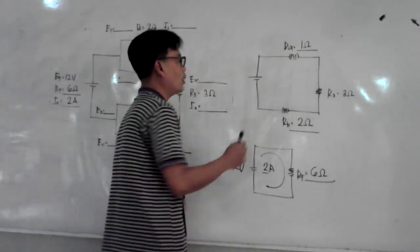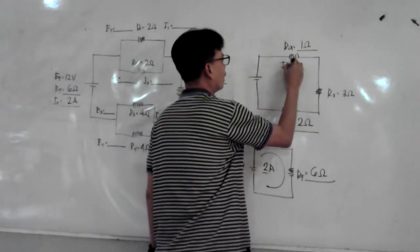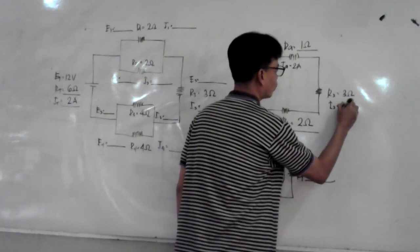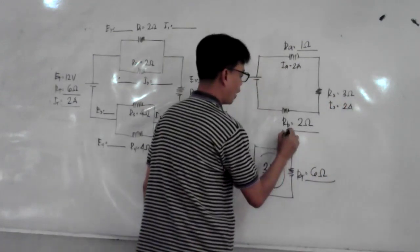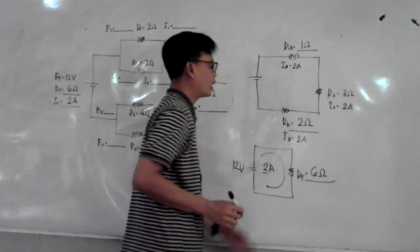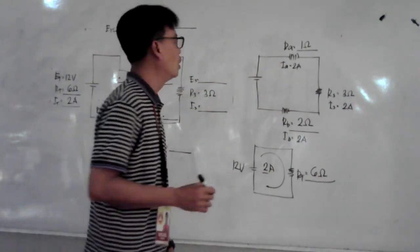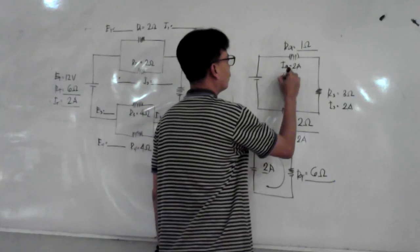Your Ia is 2 amperes. Your I3 is 2 amperes. And your Ib is 2 amperes. Since you have the current, you can now solve for the voltage.